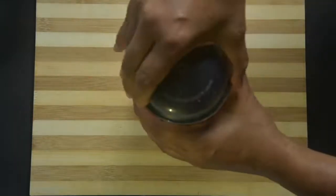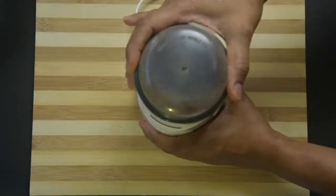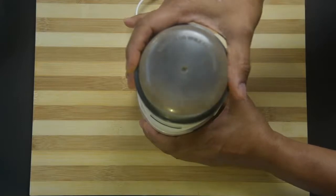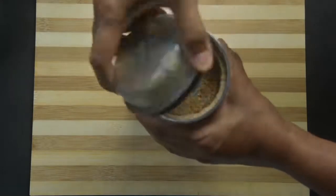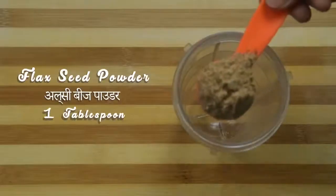Make a fine powder of the flax seeds. Take this fine powder to a wet jar of the mixer grinder.